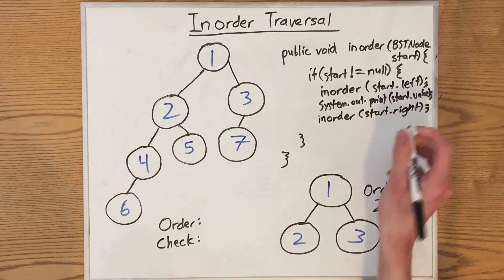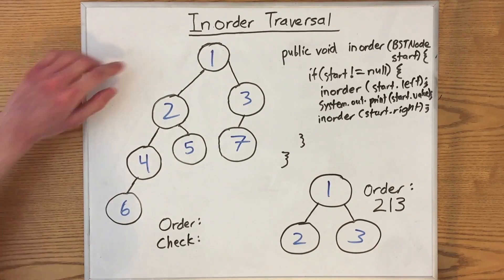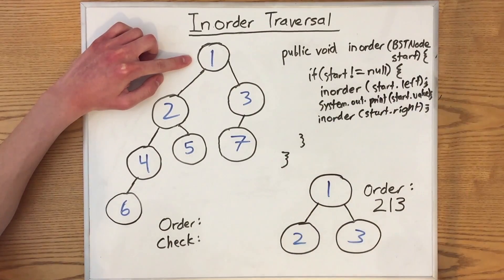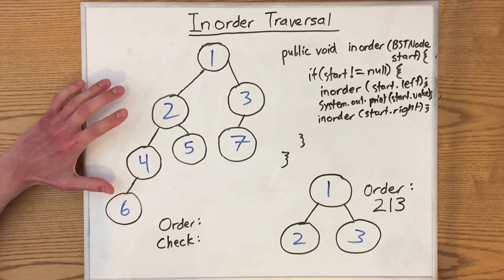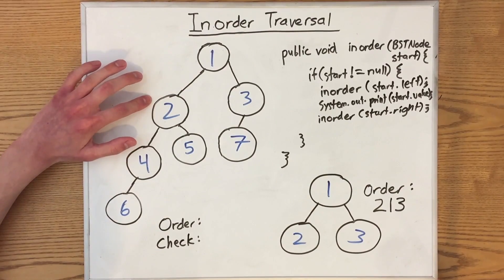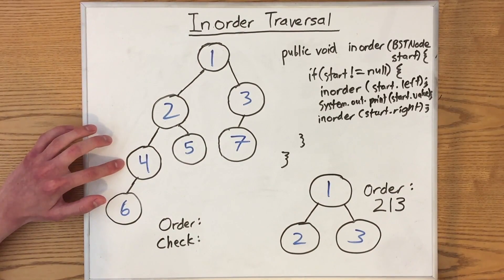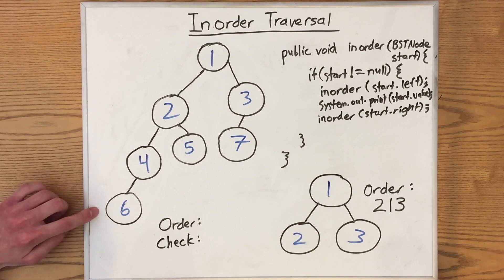Let's check out how this might work in this tree. So let's say this is our root node. We know that the first thing we do is call inorder recursively on our left subtree. The first thing that we do over here is call inorder recursively on its left subtree, and then this tree calls inorder recursively on its left subtree. Now we're on this node. We call inorder recursively on its left child.